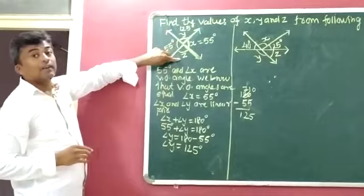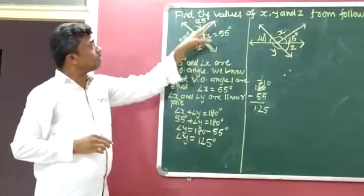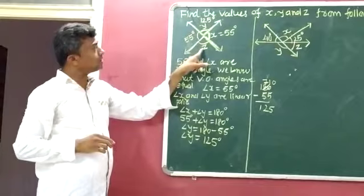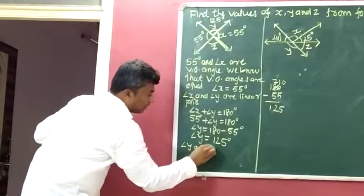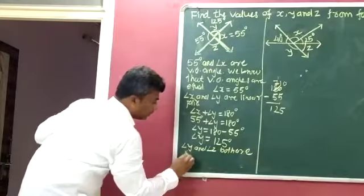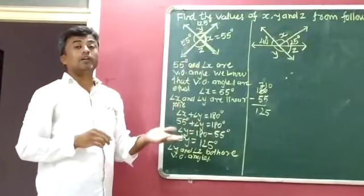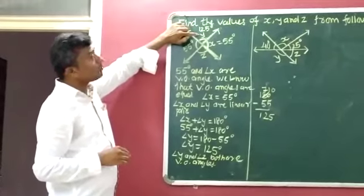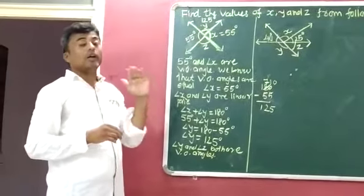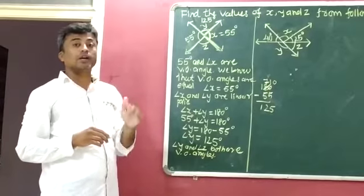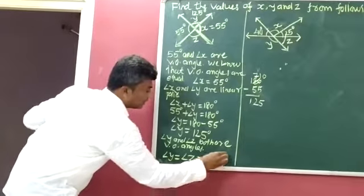Now see angle Y and angle Z. Angle Y and angle Z are both exactly opposite to each other and they cannot have any common arms, so angle Y and angle Z are both vertically opposite angles. We already proved that vertically opposite angles are equal, so whatever the measurement of angle Y, it is also the measurement of angle Z. So angle Y is equal to angle Z, which is equal to 125 degrees.